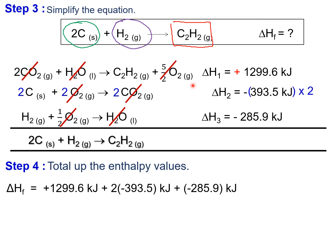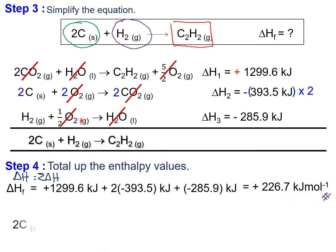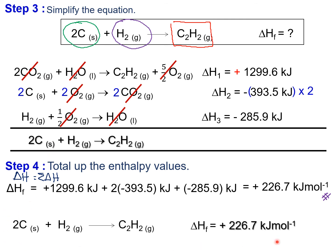What remains is 2 carbon in solid phase, 1 mole of hydrogen gas, and 1 mole of C2H2 in gas phase — exactly the target equation. To find the enthalpy, sum up all the enthalpy values you have adjusted. The enthalpy of formation for the target thermochemical equation is positive 226.7 kJ per mol. Optionally, you can write down the completed target thermochemical equation with this value.